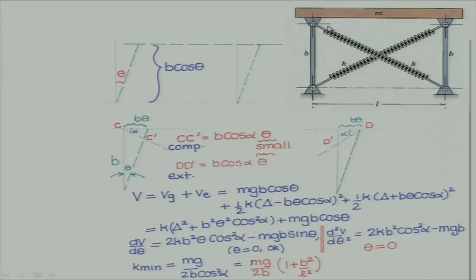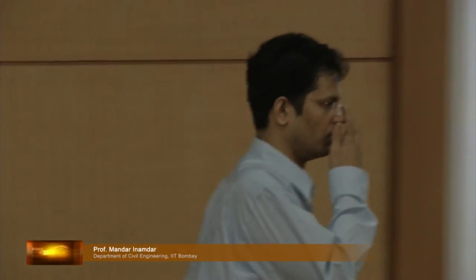The minimum spring constant is k equals Mg divided by (2B cos²alpha). Since cos alpha equals L divided by the square root of L² plus B², cos²alpha equals L² divided by (L² plus B²). Substituting gives the minimum stiffness as Mg divided by 2B times (1 minus B² by L²). If the stiffness is strictly greater than this value, the assembly will be in stable equilibrium.